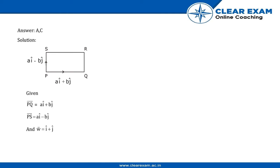Answer: A and C. Solution: From this diagram, given PQ = ai + bj, PS = ai - bj, and w = i + j.